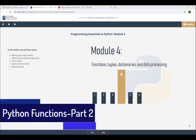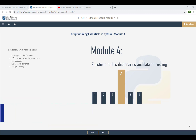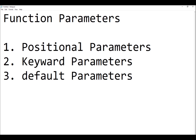Welcome, dear students, to another tutorial on programming in Python. This is the second tutorial in our series explaining Module 4: the use of functions. In this tutorial we are going to focus on function parameters. There are three types we will cover: positional parameters, keyword parameters, and default parameters.